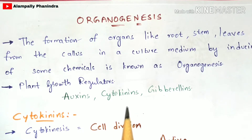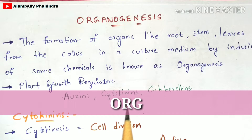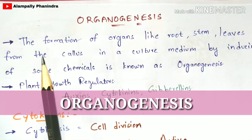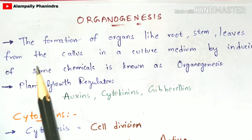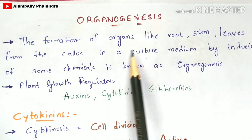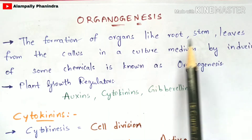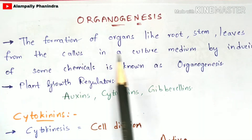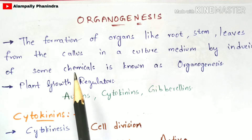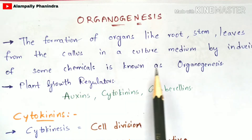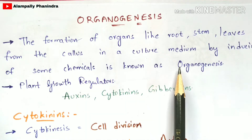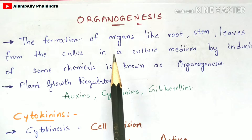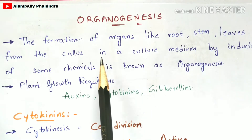Coming to the definition of organogenesis: the formation of organs like root, stem, and leaves from the callus in a culture medium by inducing some chemicals is known as organogenesis. So what do you understand by this definition?